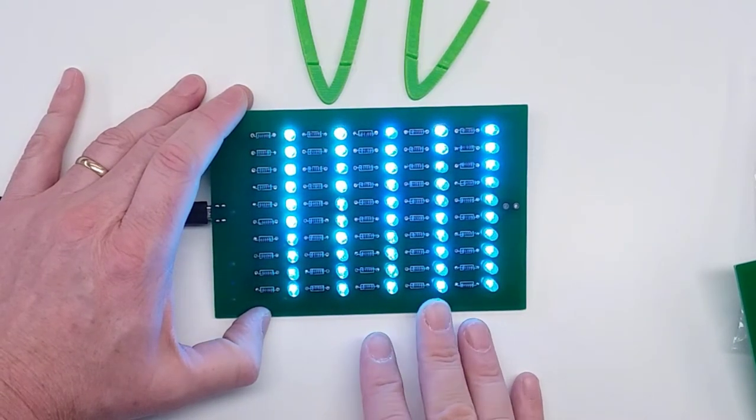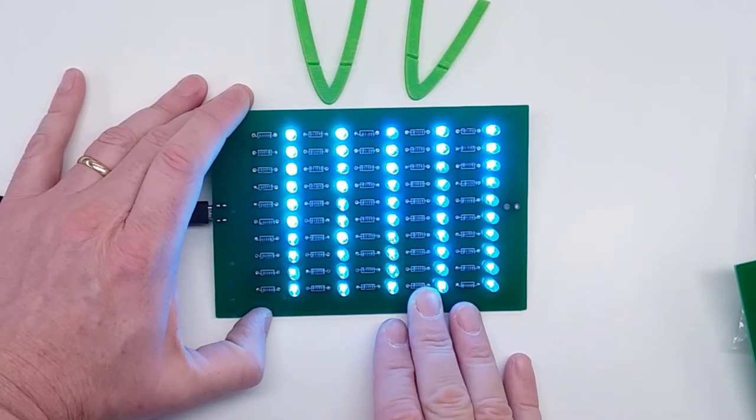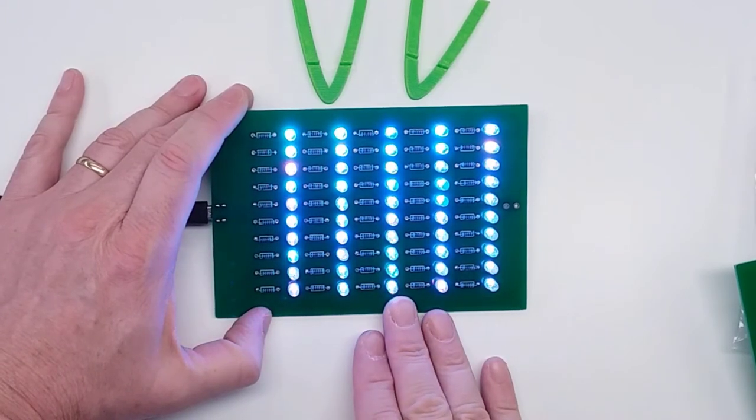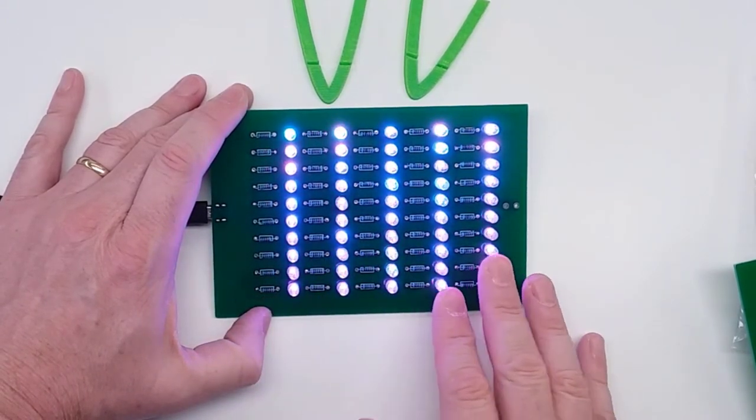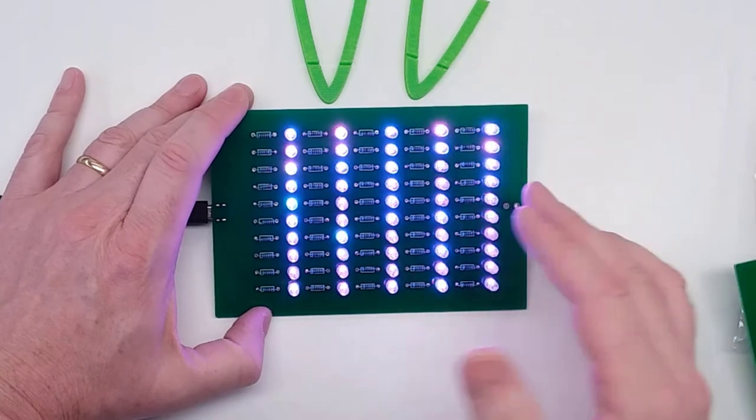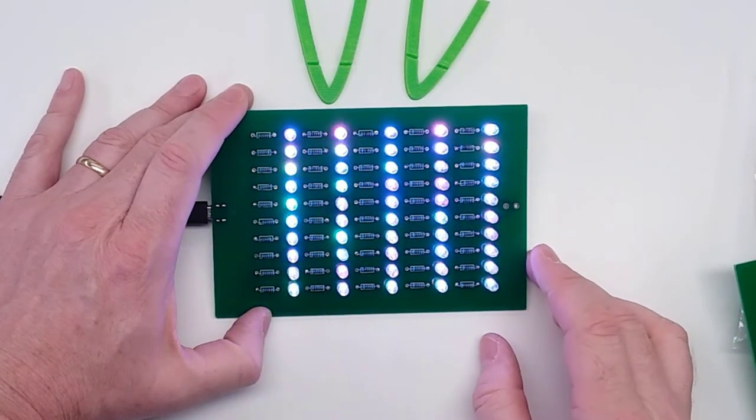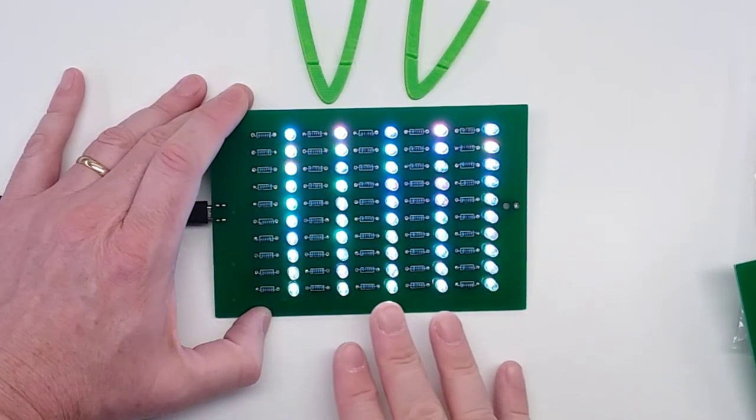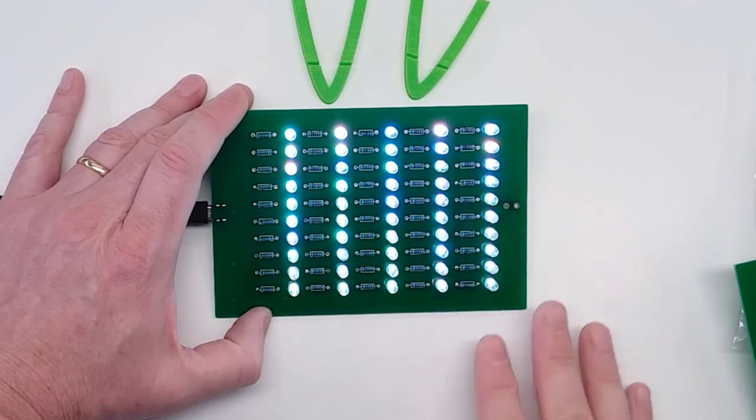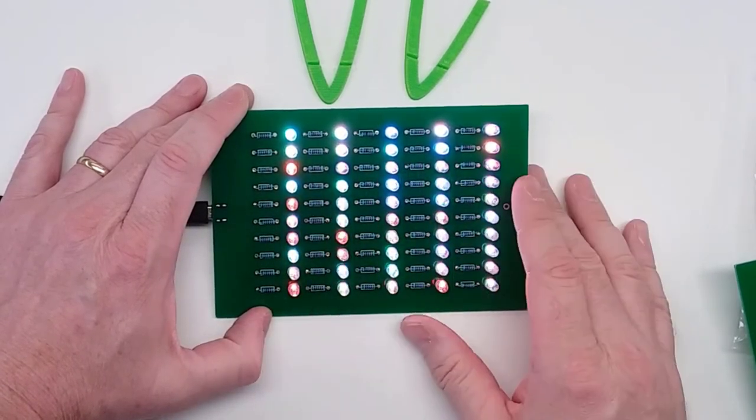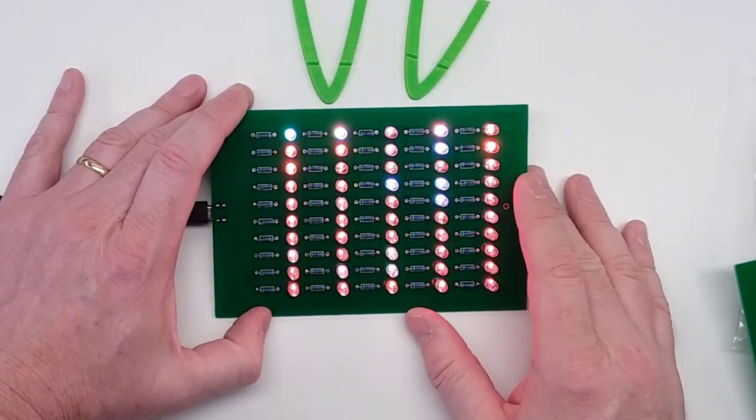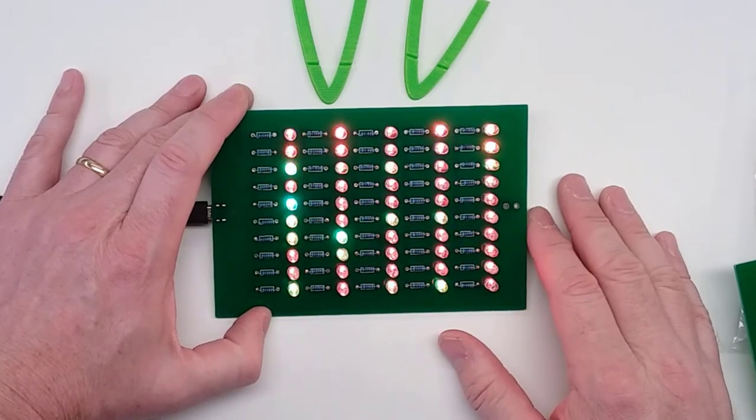This is particularly noticeable when it goes from that final transition of blue back to red. Now you'll see as it starts to shift a couple of them are still blue and before they go completely red. You'll see here as the longer it goes the more it becomes out of sync, so I'll let this run for a minute or so and then I'll come back and show you how they're all out of sync.